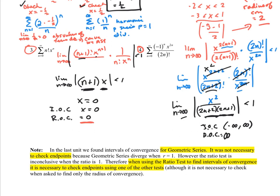Here's an important final note. In the last unit, we found intervals of convergence for the geometric series — it was not necessary to check the endpoints, as we saw in number 2, because the geometric series diverges when r equals 1. However, the ratio test is inconclusive when the ratio equals 1. Therefore, when using the ratio test to find intervals of convergence, it is necessary to check endpoints using one of the other tests. This is not necessary when only asked for the radius of convergence. So: radius of convergence — no need to test endpoints; interval of convergence using the ratio test — you must test endpoints.